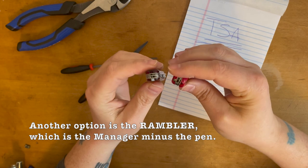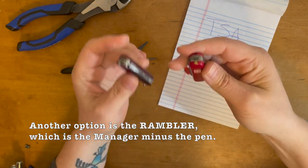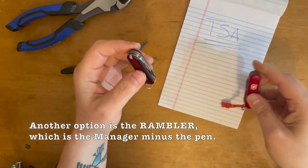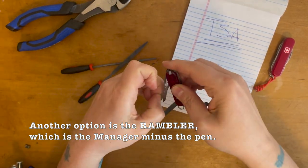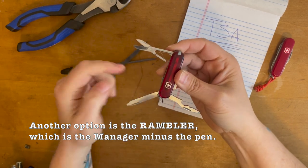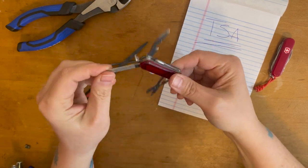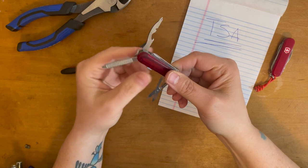So other than that difference of the light and the tweezers, these are the same. So we've got all these items. It's basically the Jet Setter plus this file and flathead that everybody wants.